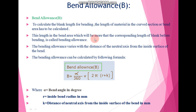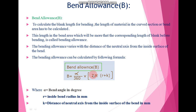Next, bend allowance: to calculate the blank length for bending, the bend allowance is used. It is the length of the material in the curve section or bend area. This length in the bend area, which is more than the corresponding length of the blank before bending, is called the bending allowance. It varies with the distance of the neutral axis from the inside surface of the bend. The formula is: B = (alpha / 360) × 2π(r + k), where alpha is the bend angle in degrees, r is the inside bend radius in mm, and k is the distance of the neutral axis from the inside surface of the bend in mm.